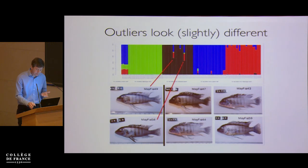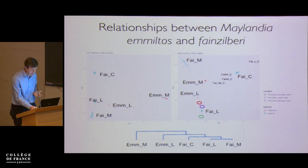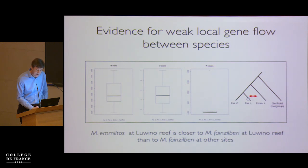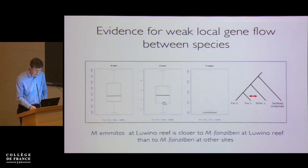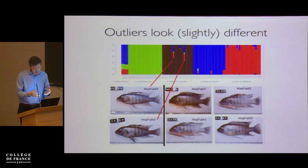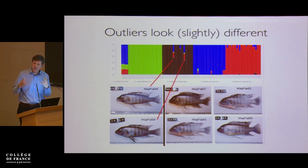There's also evidence for weak local gene flow between species — the fine zilberry in Luina Reef are closer to the amiltos in Luina Reef than the other fine zilberry are. A D-test for this is significant with a z-score of about four and a half or five. With tens of individuals and hybrids at this level, how are they keeping themselves separate? It's a rich system to pursue but we don't have samples of everything in the open lake, so it's hard to follow.